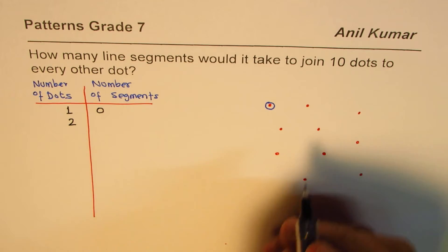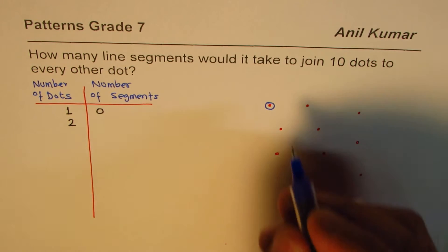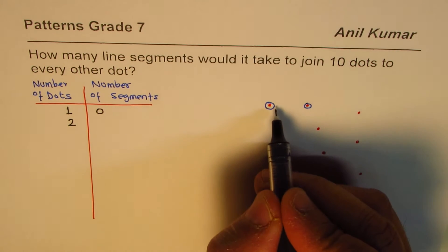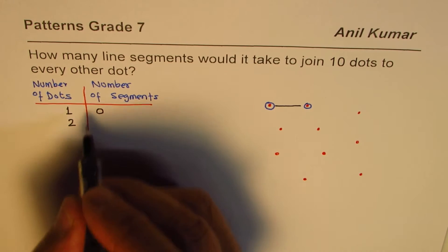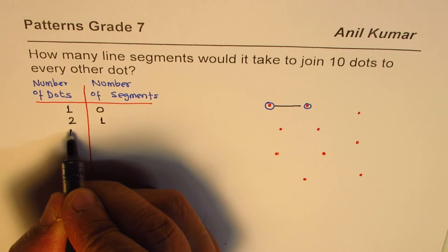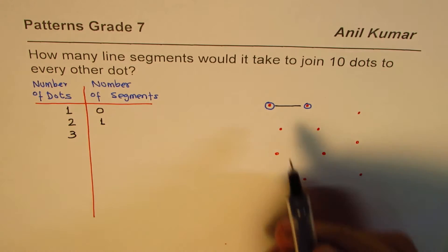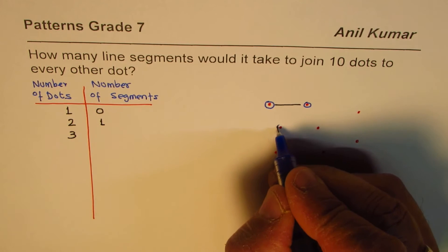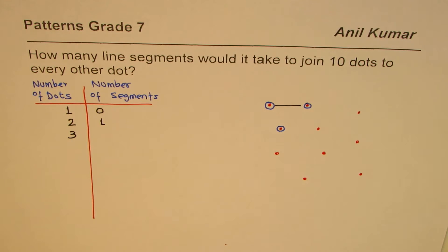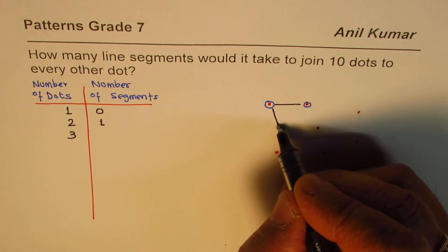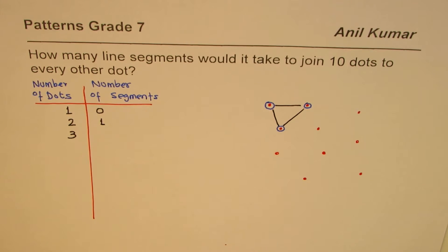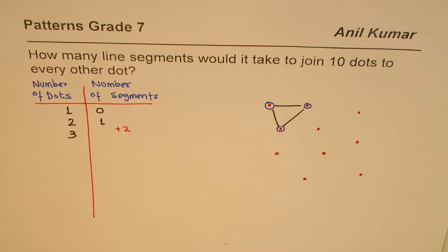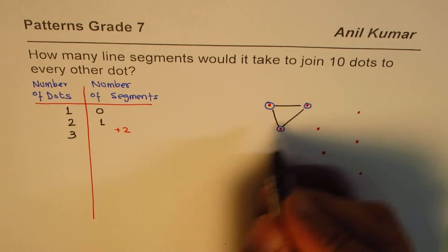Now let's take two dots. If I take two dots, the number of ways is just one — I can join them with one line segment, so we get one. How about three dots? If I introduce a third dot and try to join it with the previous two, I have two more line segments. So we have plus two, giving us one plus two equals three.